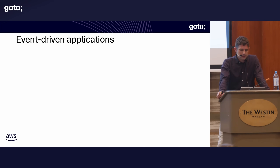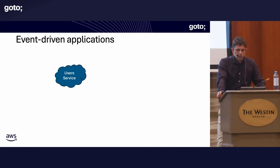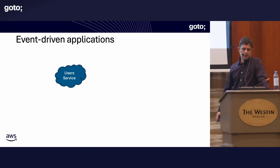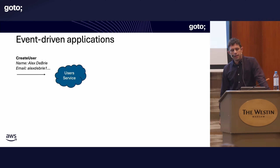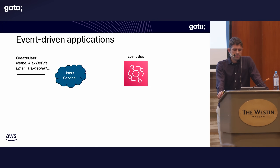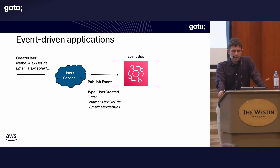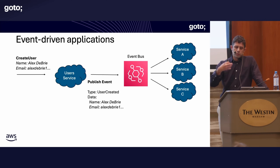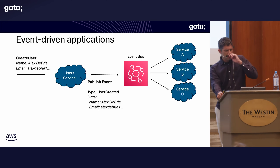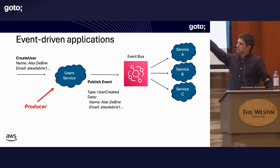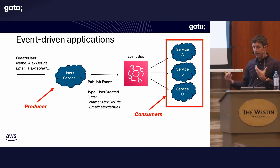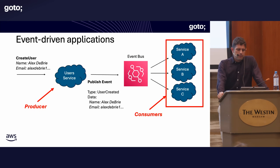What are event-driven applications? Let's walk through a typical architecture, starting with a user service — most applications have some notion of a user. A request comes in to create a user. As part of its work in this event-driven application, the user service produces onto an event bus or event stream, publishing an event describing what happened — in this case, a user-created event with some data. Different services subscribed to that event bus can then do work on it. The two key vocab words: the producer, which produces the event, and the consumers. Most services will be both producers and consumers at different times in their lifecycle.